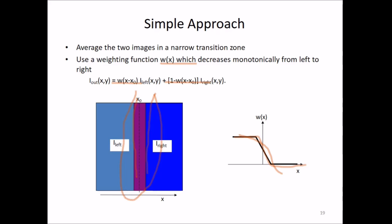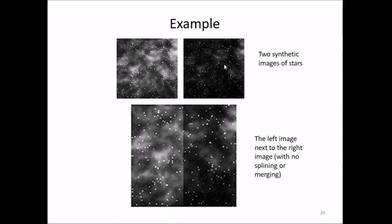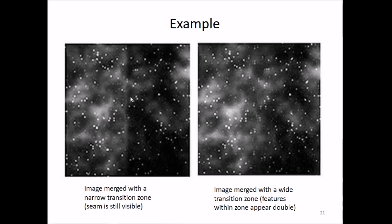This is how it is seen: a stepwise curve from left to right. These are two synthetic images of stars—the left image next to the right image with no splining or merging. What happens is there will be duplication of stars. Image merged with a narrow transition zone—we can also increase the transition, making the narrow zone wider. But the features within the zone appear double.